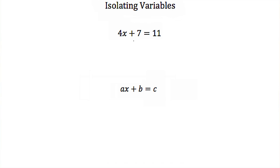We could do that. First, we would subtract 7 from both sides, and we would get 4x is equal to 4. Then we would divide both sides by 4 to get x alone. We'd find out that x is equal to 1.